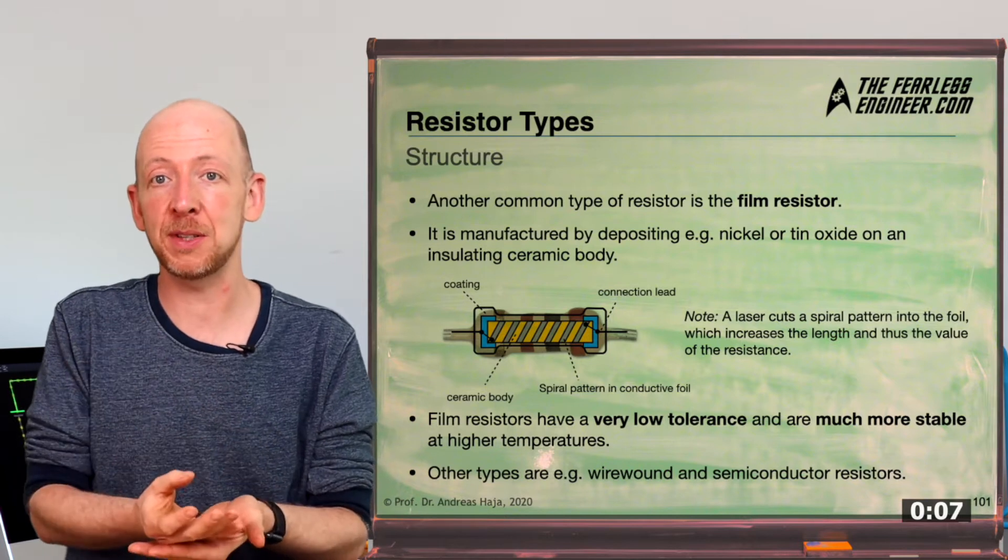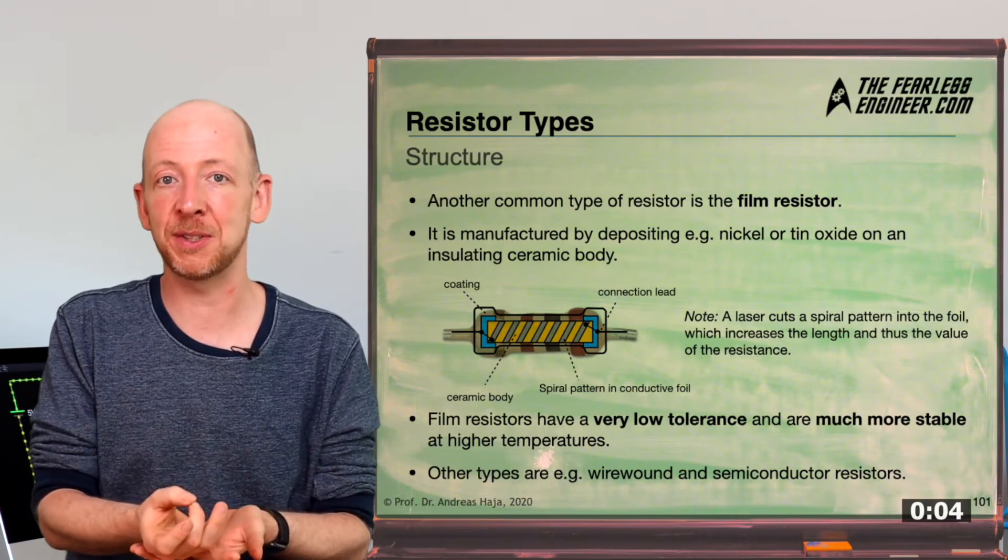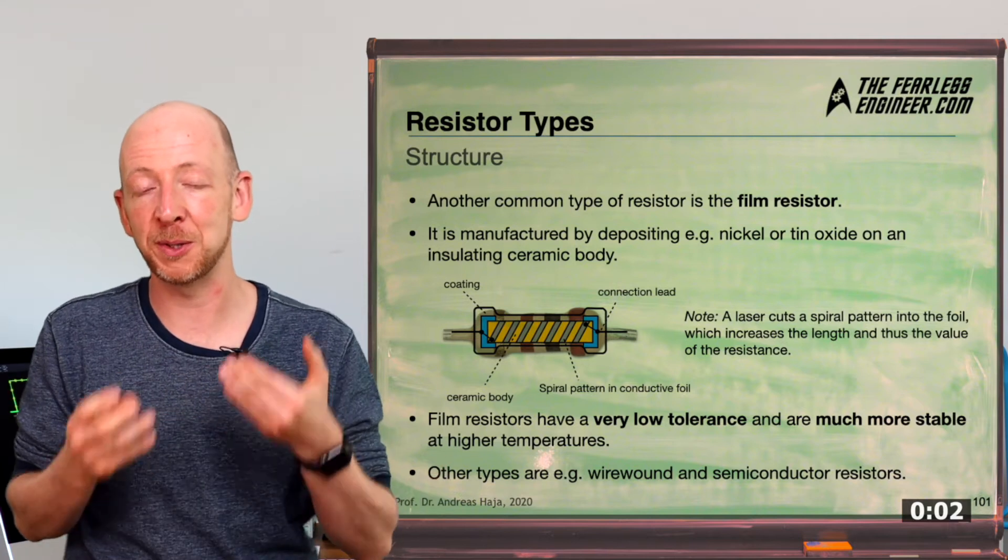And in addition to these two types we have discussed now, there are a few more, which are, for example, the wire resistor for high power applications as well as a semiconductor resistor, which is something which we will take a closer look at in a later video.